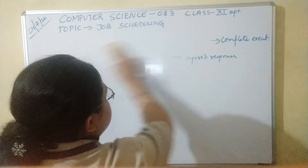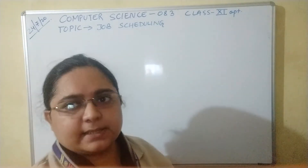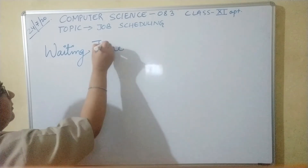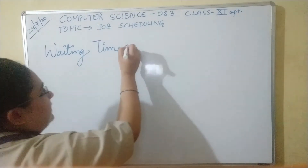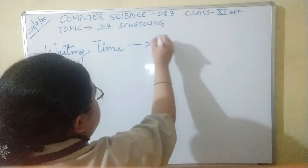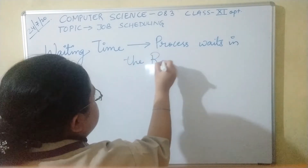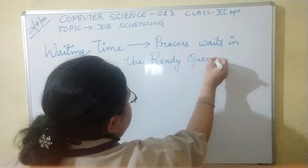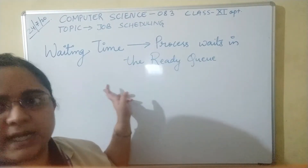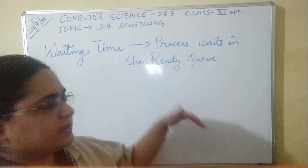There is one more concept: waiting time. Response time and turnaround time should be short if your operating system needs to be efficient. Waiting time is the amount of time a process waits in the ready queue — that is known as waiting time. This waiting time should also be less, meaning a process should not wait for an indefinite period of time before it gets to execute on the CPU.